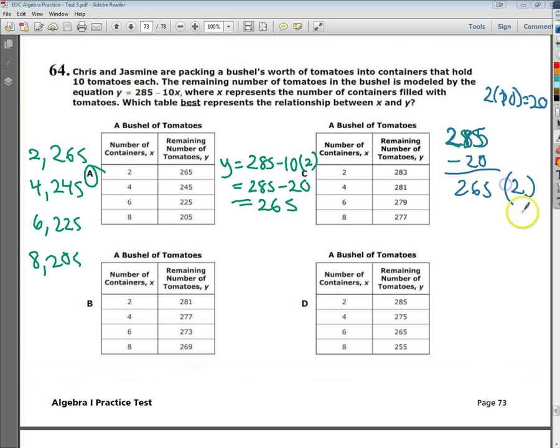So, that would be taking 2 containers away. If I took 20 more away, which would be 4 containers, I end up with 245. And you go on down from 6 to 225. So, really just subtracting the number of tomatoes you have in each container from your original amount of 285.